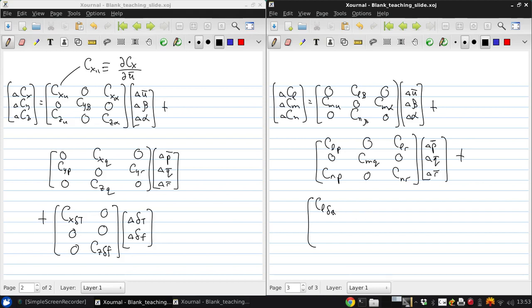CLBA, 0, 0 for ailerons, 0, CMBE for the elevator, 0, 0, 0, CNDR for the rudder, times delta delta A, delta delta E, delta delta R.